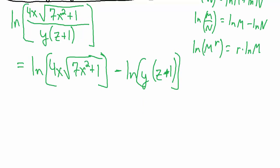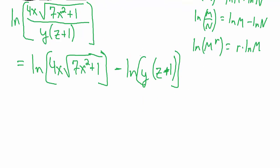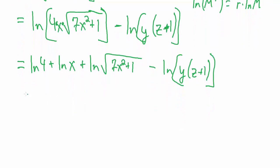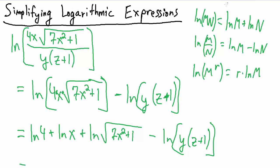There's quite a lot to do here, so we can work on a few things at once. Let's focus on simplifying the first term first. We have natural log of 4 times x times the square root of 7x squared plus 1 — that's a product of three things. So we split it as: natural log of 4 plus natural log of x plus natural log of the square root of 7x squared plus 1. That's just a repeated application of the product rule for logs.